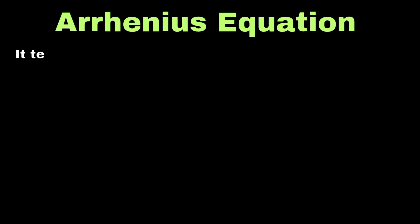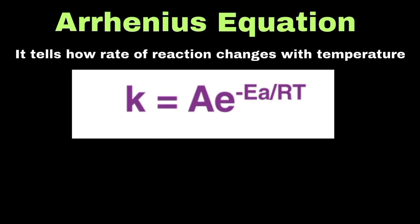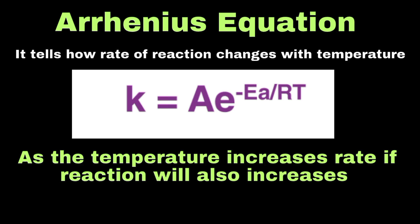The Arrhenius equation shows how the reaction rate changes with temperature. It is expressed as k = Ae^(−Ea/RT), where k is the rate constant, A is the frequency factor, Ea represents the activation energy, R is the gas constant, and T is temperature on the Kelvin scale. As temperature increases, the exponential term increases, making the reaction faster. For example, refrigerating food slows down spoilage because lower temperatures reduce reaction rates.